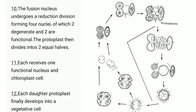The fusion nucleus undergoes a reduction division forming four nuclei, of which two degenerate and two are functional. The protoplast then divides into two equal halves. Each receives one functional nucleus and chloroplast. Each daughter protoplast finally develops into a vegetative cell.